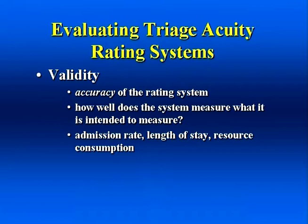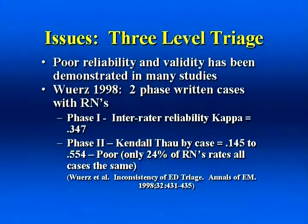Triage systems also measure intra-rater reliability — will I assign the same triage score to the same patient next week? Inter-rater reliability can be measured with different statistics, but is frequently measured with a kappa statistic. A kappa of zero indicates no agreement and one indicates perfect agreement. Generally, a kappa score of 0.7 or greater indicates very good agreement. A triage system must also be valid. Validity is an accuracy term. Measuring validity of a triage system is more challenging, and proxy measures of acuity have been used — typically hospitalization, number of resources used, and death.